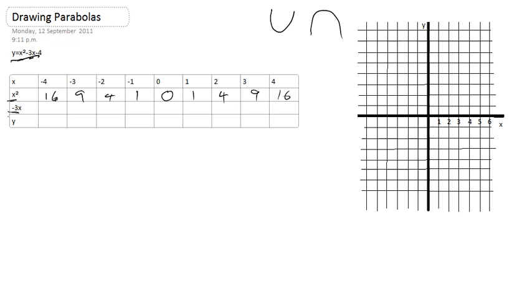Right, so I need to do minus 3 times minus 4. Minus 3 times minus 4 is 12. Minus 3 times minus 3 is 9. Minus 2 times minus 3 is 6. Minus 1 times minus 3 is 3. 0 times minus 3 is 0. 1 times minus 3 is minus 3. 2 times minus 3 is minus 6. 3 times minus 3 is minus 9. 4 times minus 3 is minus 12.